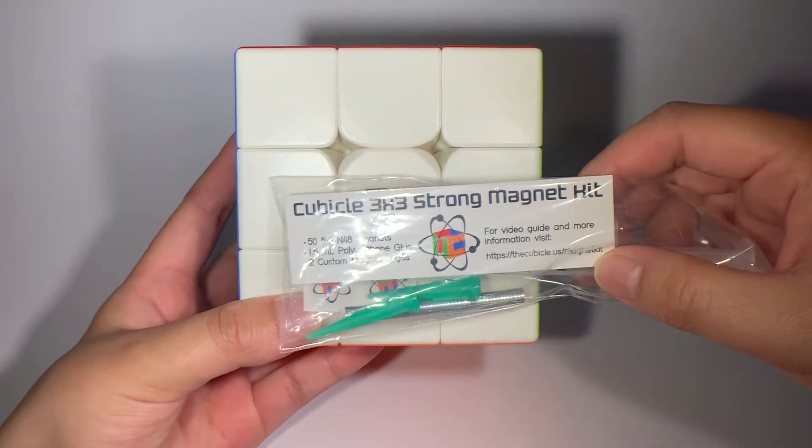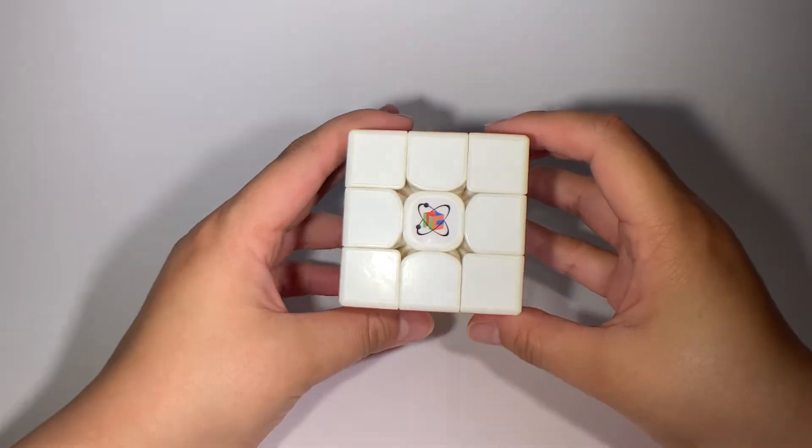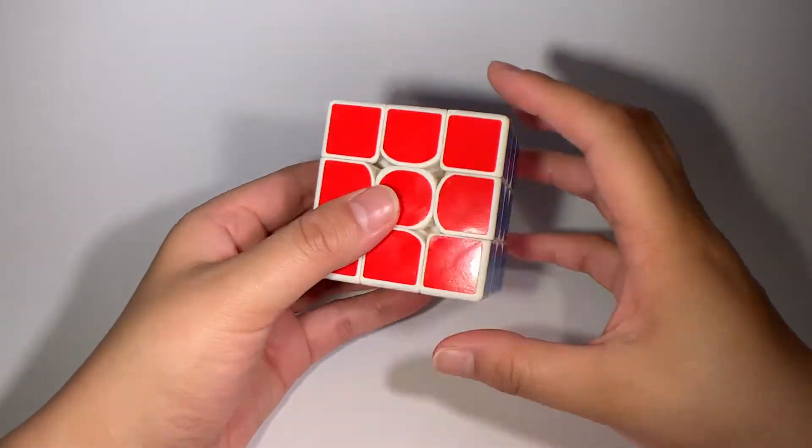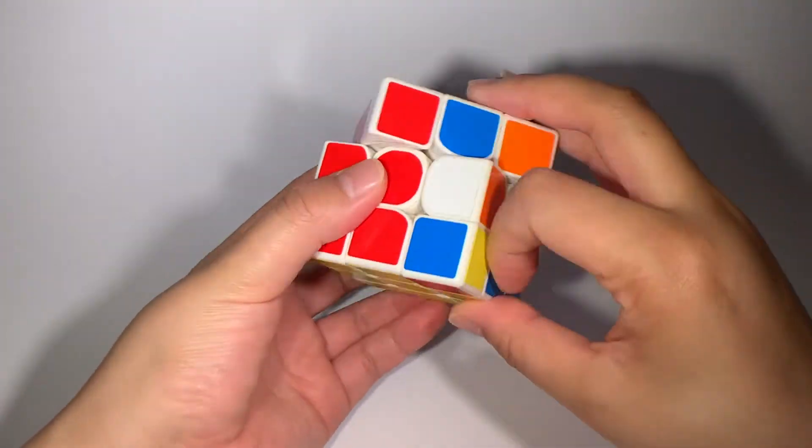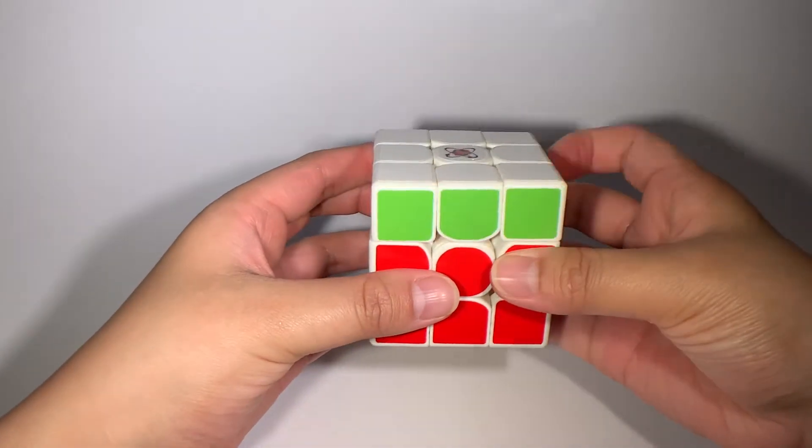Hello magnets! So I do have some experience magnetizing cubes. These are both Yushin Little Magics that I magnetize using weak and strong magnets from the cubicle. So this white Yushin Little Magic has weaker magnets. I prefer that I just find the stronger magnets a bit too strong.